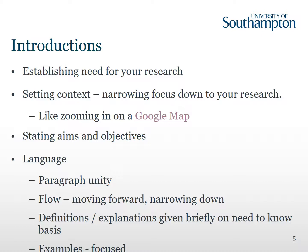Definitions and explanations should only be given on a need-to-know basis — where it's essential. If you're using a piece of technology that an educated reader couldn't be expected to know, then you need to briefly explain that, but don't give more than is essential at this point. Give it as briefly as possible, and then provide more detail in your literature review. Examples you use should be focused and should be leading where you want them to go.